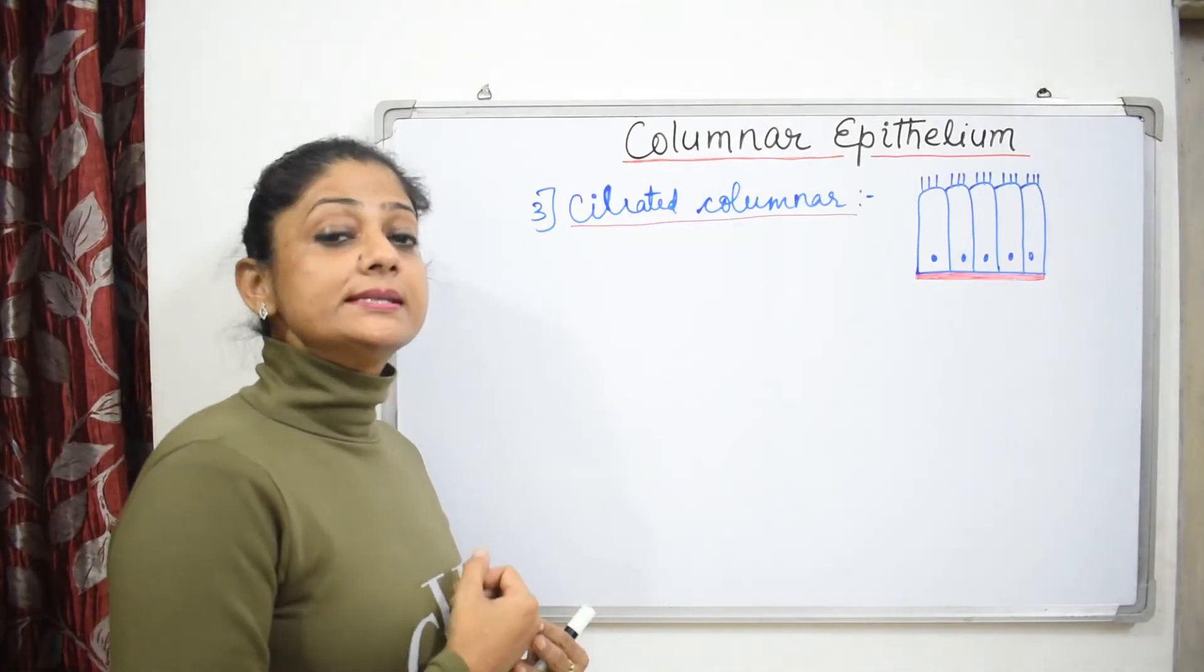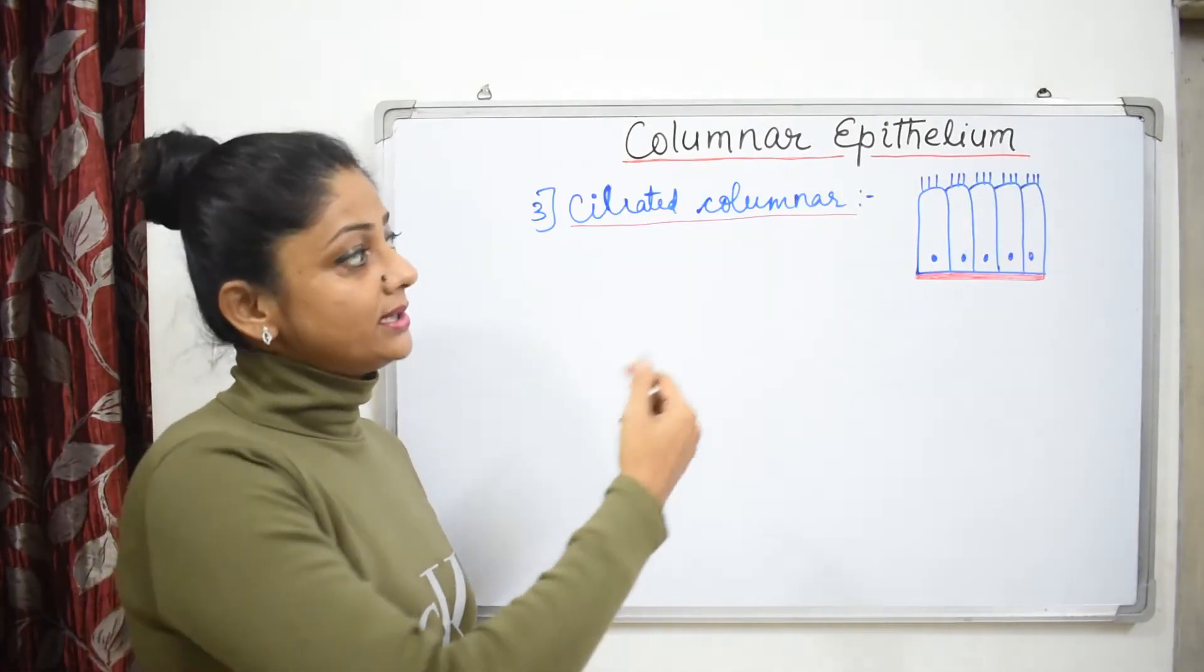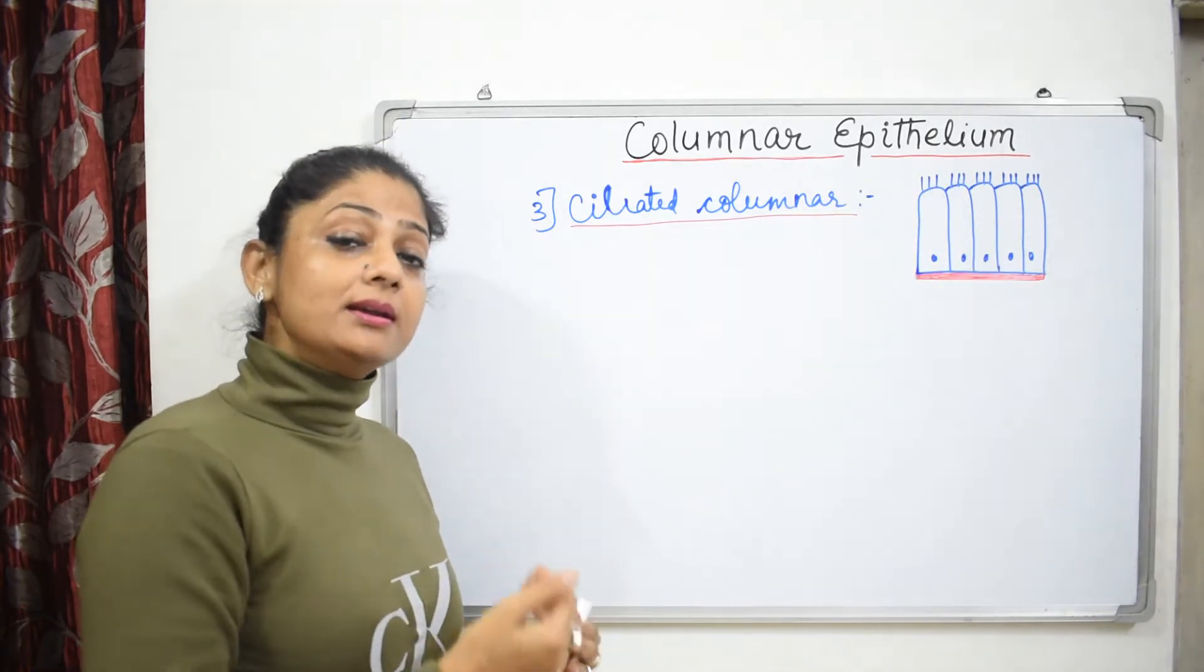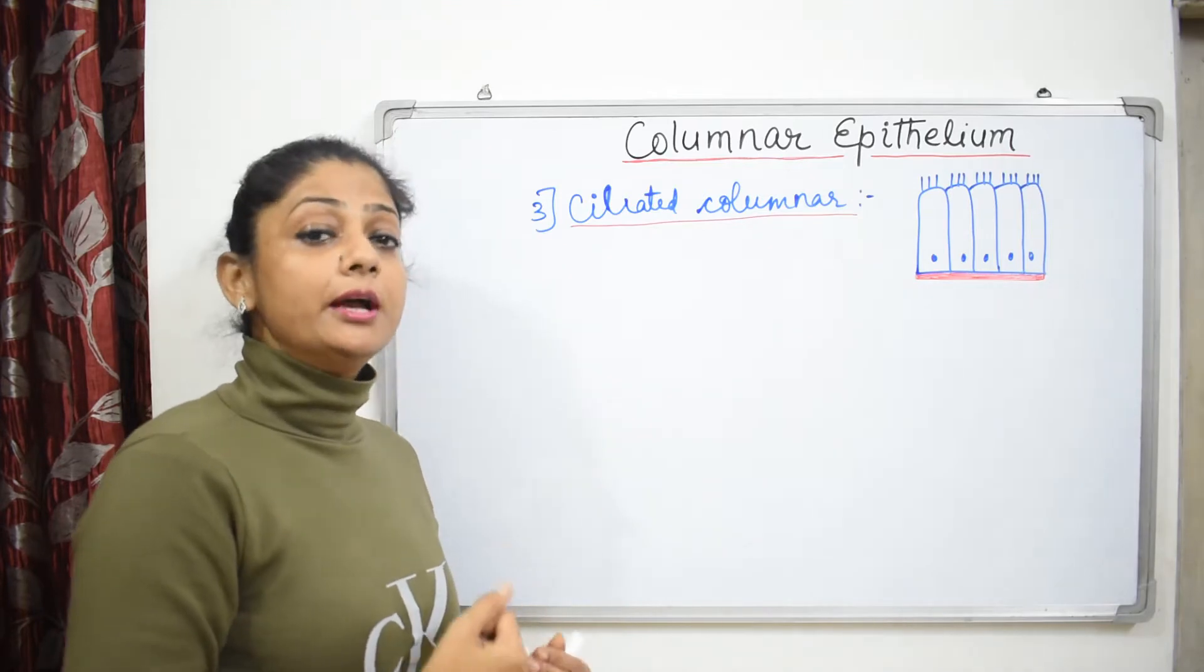The third type is ciliated columnar. Ciliated columnar means it will be made up of cilia, and cilia we have discussed in the previous videos.